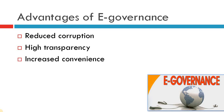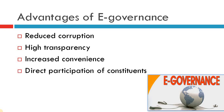Increased convenience. We don't have to travel from one place to another. We don't have to meet people. There are no people telling us to go to this particular department or that department. So there is convenience which is increased. Next point: direct participation of the constituents. Here, directly the government is participating in the request, taking care of the request and giving us the result.